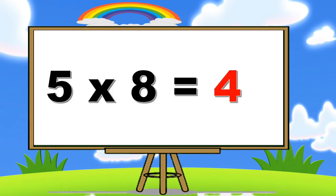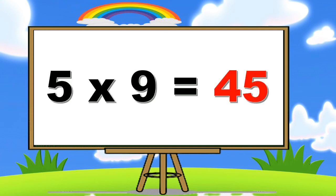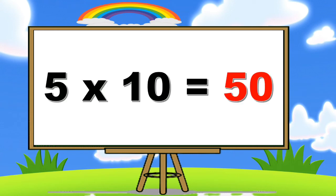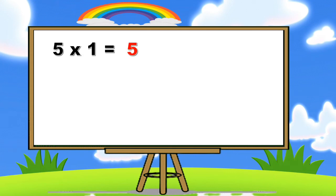Five eights are forty. Five nines are forty-five. Five tens are fifty. Five ones are five. Five twos are ten.